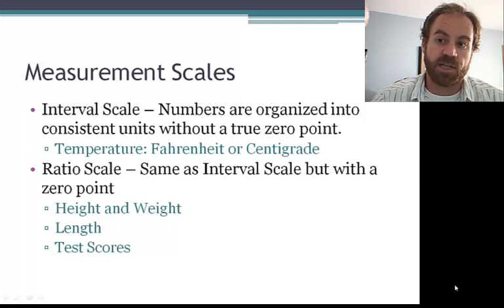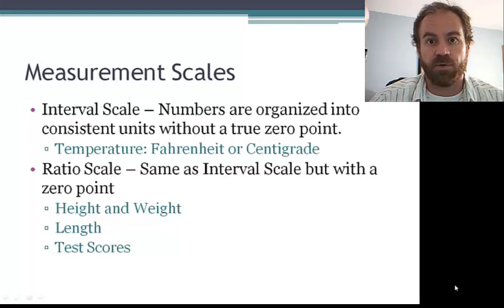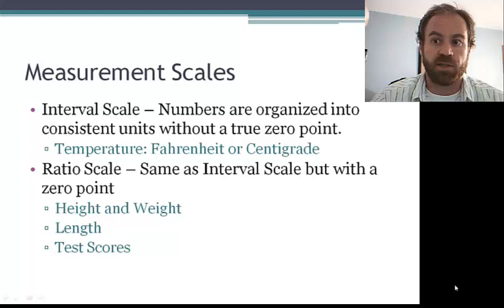A ratio scale is the same as an interval scale, but now we have a zero point. So test scores are a good example. Although it's unlikely that someone will score zero on the next unit test, it is a possibility, and therefore that would be a ratio scale.